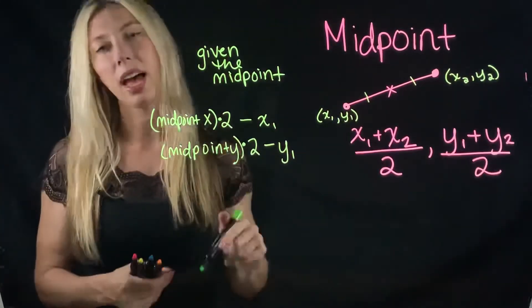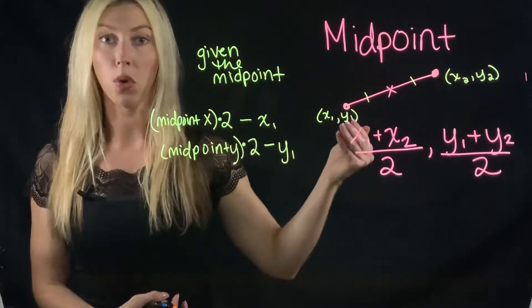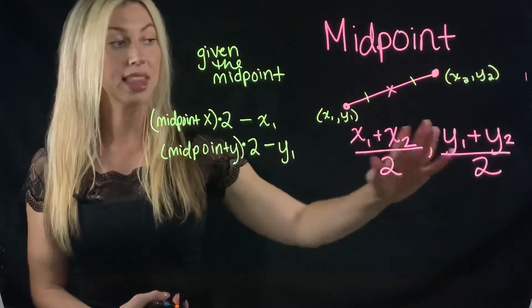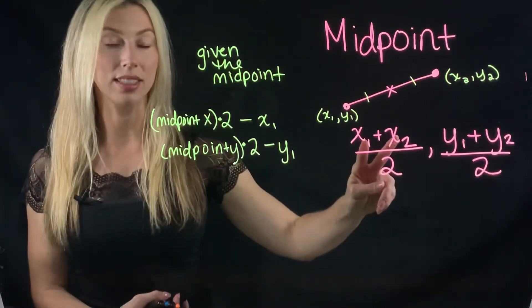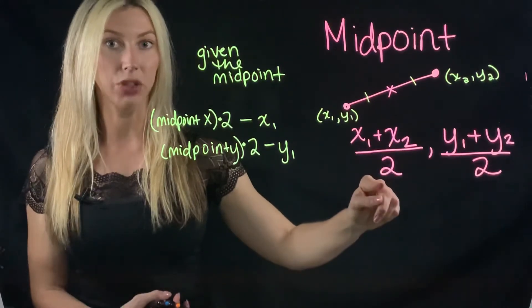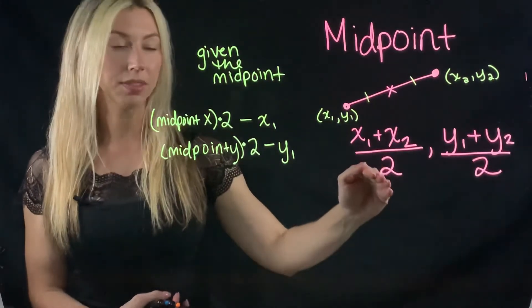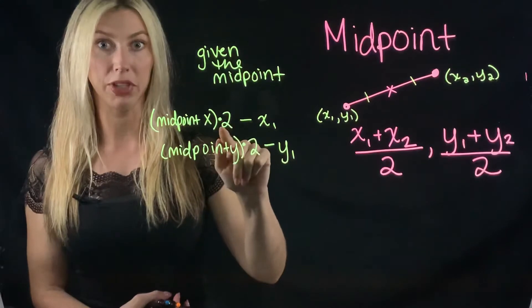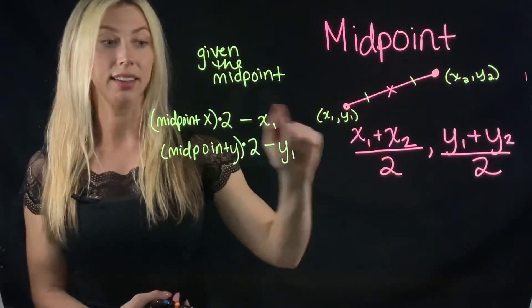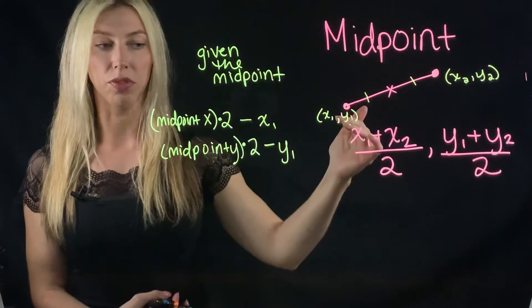And if you think about that, you're going the exact reverse order that you were doing this here. So in this one, we added the two x's and then divided by two. So the opposite of dividing by two is multiplying by two. The opposite of adding is subtracting. So we're just working in reverse.